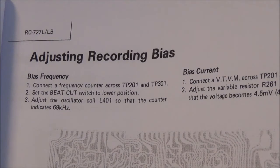In this particular unit they want the beat cut switch to be in the lower position because if we don't do that we're going to have the wrong frequency. Every time you put the beat cut switch in a different position, the bias oscillator frequency is going to change a little bit.